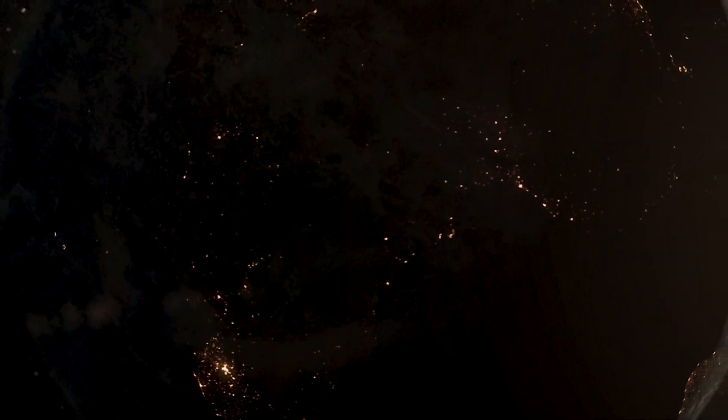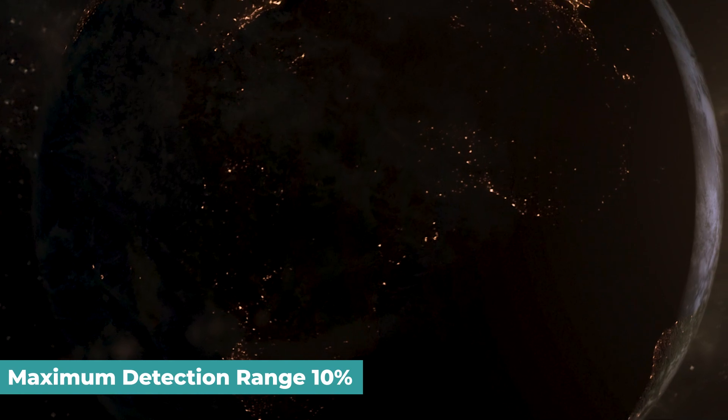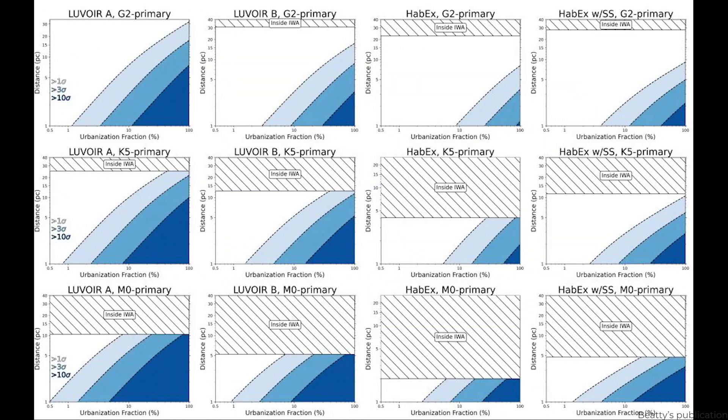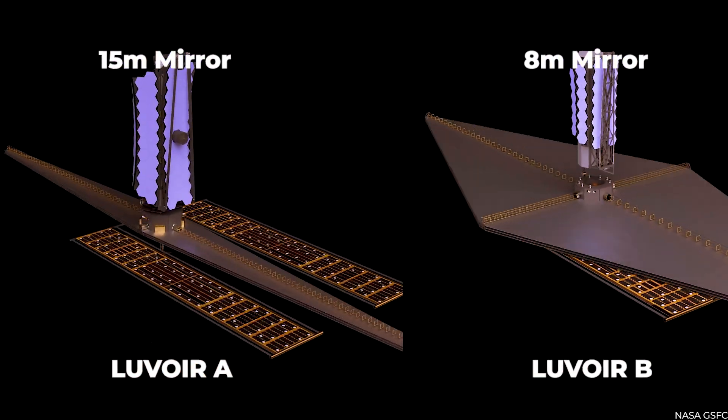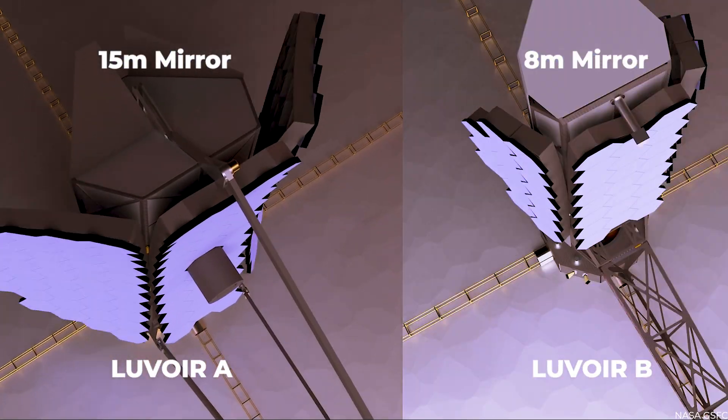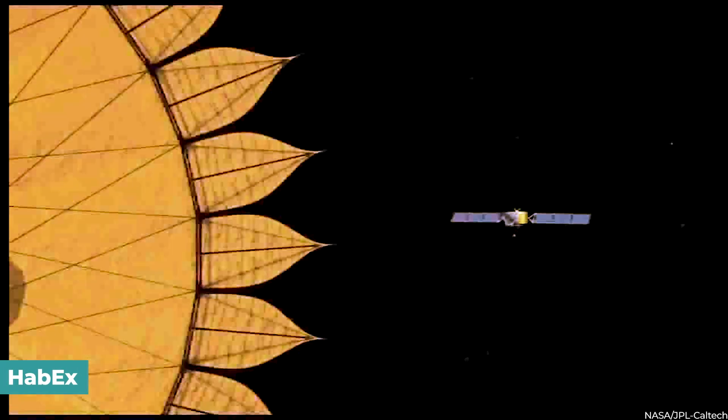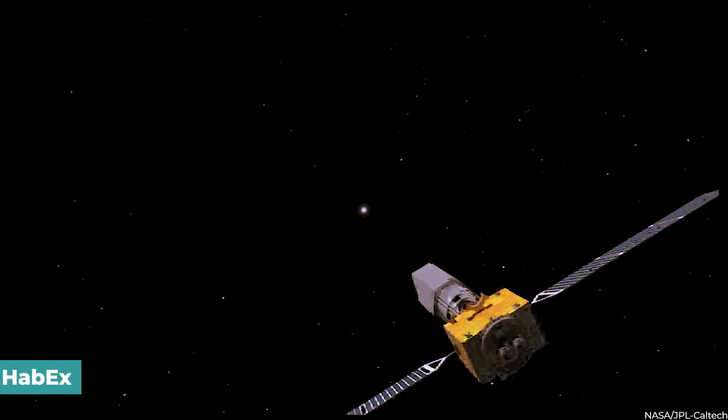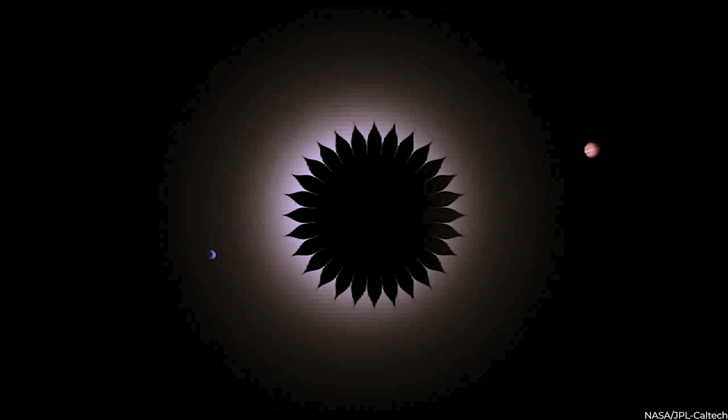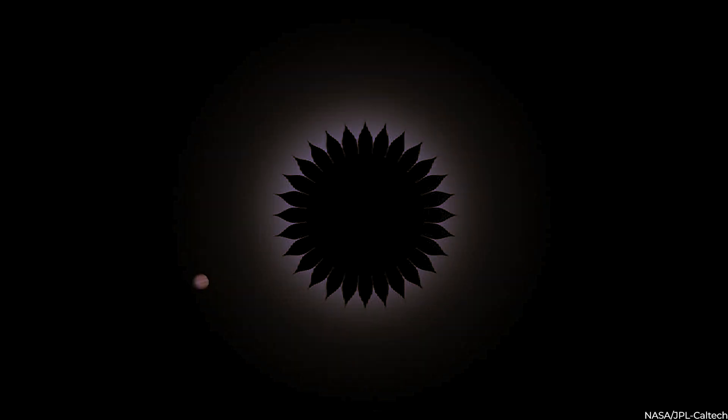The maximum detection range for any meaningful detection is around 30%. The four scopes shown in the illustration are two LUVOIR versions and two HABEX variants. LUVOIR A has a 15-meter mirror, whereas LUVOIR B has an 8-meter mirror. HABEX is the scope combined with the floating solar shade to filter starlight and help in planet discovery.